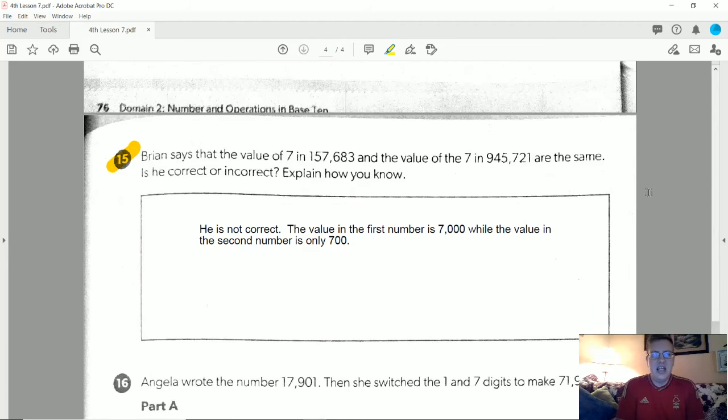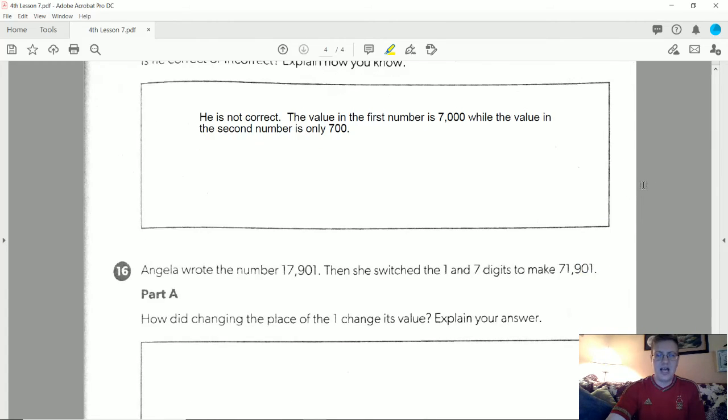Number 15, Brian says the value of 7 in 157,683 and the value of 7 in the number 945,721 are the same. Is he correct or incorrect? He is not correct. The value for the 7 here is in the thousands place, so it would be worth 7,000. In this number, it would be only worth 700, and that should be our last problem for today.